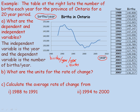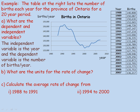Instead of saying births per year per year, there's a simpler mathematical way to write that. The second 'year' is the same as year over 1, so when you divide rational expressions, you multiply the first rate by the reciprocal of the second, which is 1 over year. That gives births on top and year times year on the bottom — year squared. So the units are births per year squared.